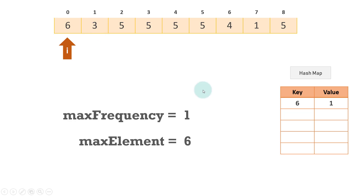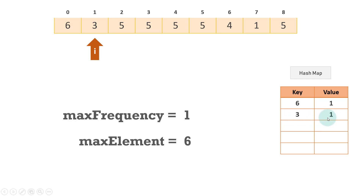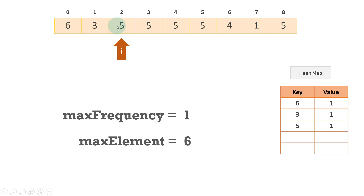Now what we'll do, we will go to the next element and check if the hash map contains this particular element. If it doesn't contain that element, we'll put a new key here with the value given as one. So we'll go to the next element. Since the element was not present, we have given a new value — three with frequency one. When we are putting an element, we will check for the max frequency. In this case, the max frequency previously was one and here also it is one, so we will not change it. We'll change only if the new frequency is greater than the max frequency stored previously.